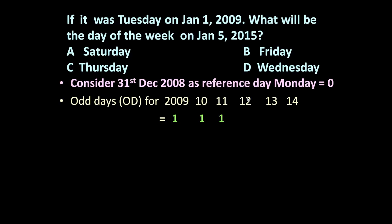2012 is a leap year, so obviously there will be 2 odd days. 2013, ordinary year, 1 odd day. 2014, ordinary year, 1 odd day.